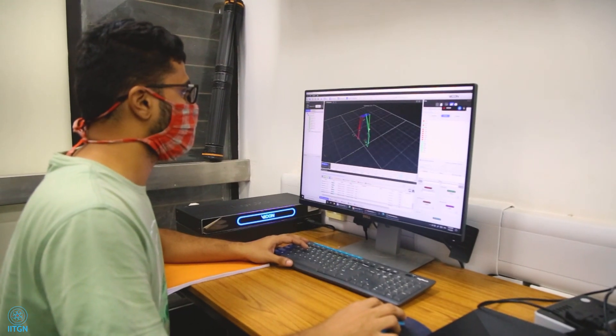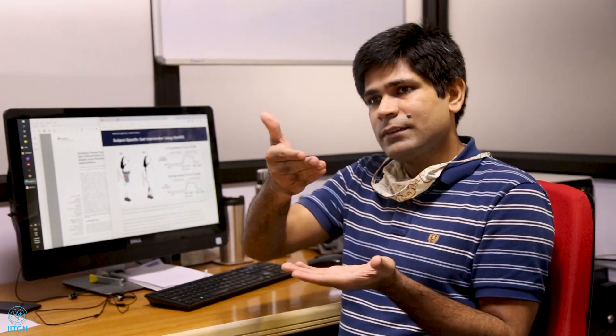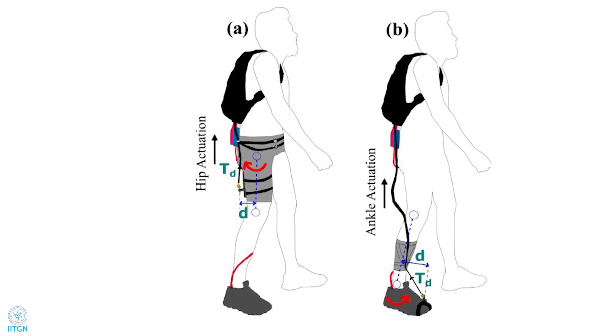Inside our arm we have these muscles which actuate our body. Based on the similar principle, we conceptualized this exoskeleton where these cables are routed around your body to actuate different parts of your body.